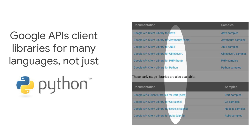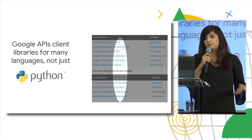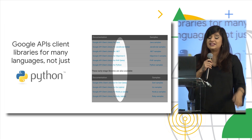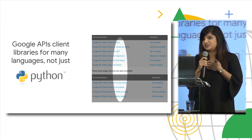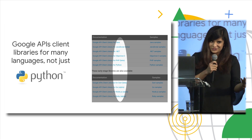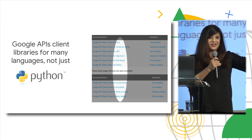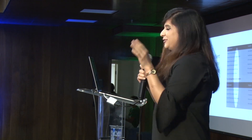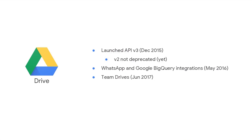We can use these APIs with a number of different client libraries — we have everything from Java to JavaScript, Ruby, Go, PHP, and .NET. Today I'll be showing code in Python. My favorite language is actually Java because it's the first one I learned, but Java can be pretty long and I have to fit all this code on a slide deck, so we can't use Java. The first thing we're going to look at is Google Drive.